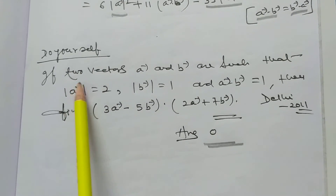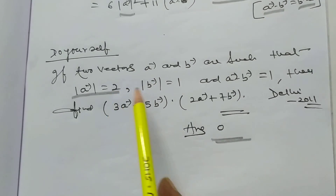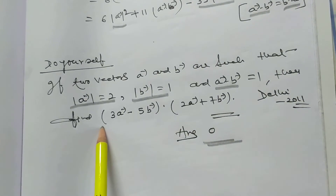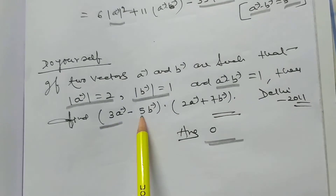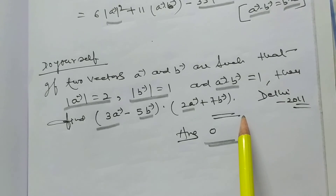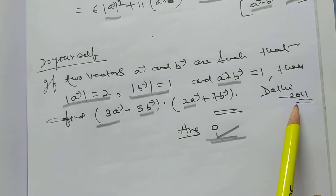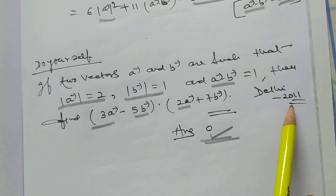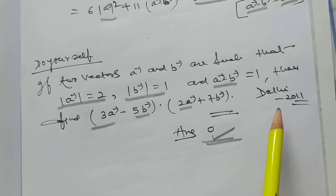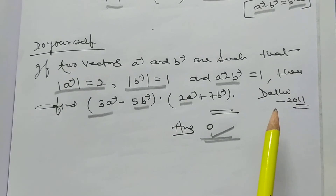Do yourself: If two vectors A and B are such that magnitude of A equals 2, magnitude of B equals 1, and vector A dot vector B equals 1, then find (3A - 5B) dot (2A + 7B). The answer will be zero. This problem was asked in the CBSE board Delhi 2011 exam. I hope you solve this problem yourself. Thank you very much.